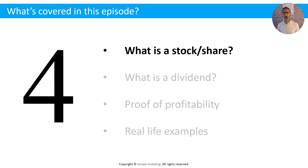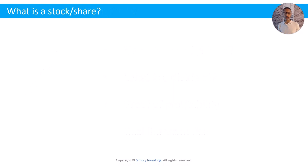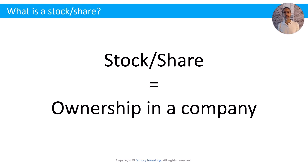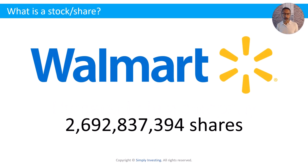Let's get started with topic number one: what is a stock or a share? For the purpose of this episode, stock and share mean the exact same thing. Some people will say 'I have five shares in Walmart,' or 'I have stock in Coca-Cola.' A stock or a share represents ownership in a company. Walmart has a little over 2.6 billion shares outstanding. If you were to buy all of the shares, you would own the entire company. If you bought just five, ten, or a hundred shares, you are still considered part owner of the company.